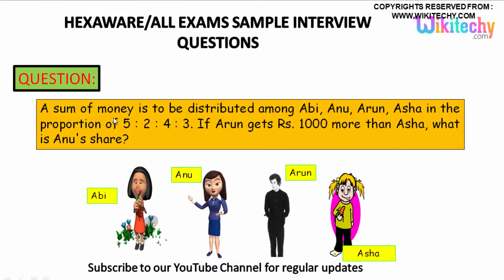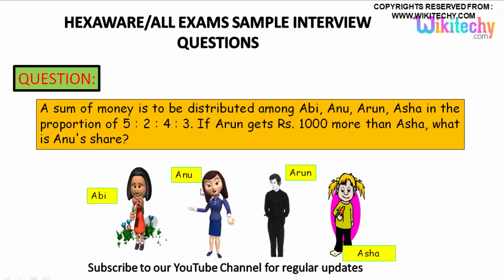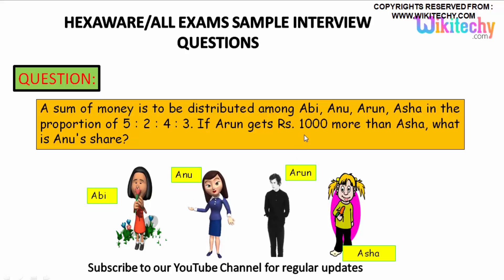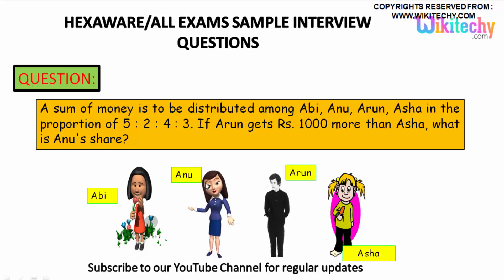A sum of money is to be distributed between Abhi, Anu, Arun, and Ashar in the proportion of 5 is to 2 is to 4 is to 3. Considering Arun, he got an amount of 1000 more than Ashar. What is Anu's share? That's the question.